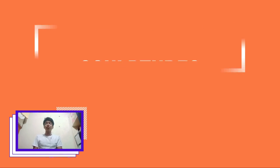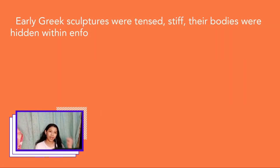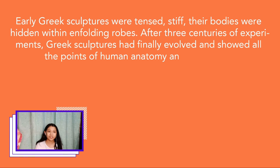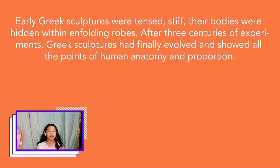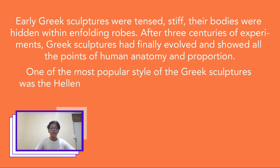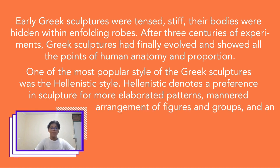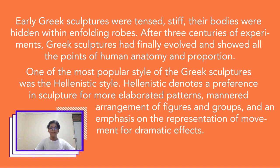Let us move on to the sculptures during the Classical Greece period. Early Greek sculptures were tense and stiff, their bodies hidden within folding robes. After three centuries of experiment, Greek sculptures had finally evolved and showed all the points of human anatomy and proportions. One of the most popular styles was the Hellenistic style, which denotes a preference for more elaborated patterns, mannered arrangement of figures and groups, and an emphasis on the representation of movement for more dramatic effect.